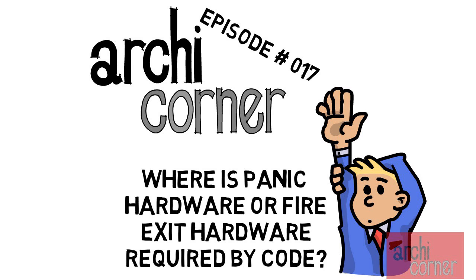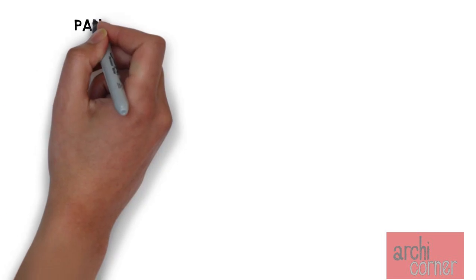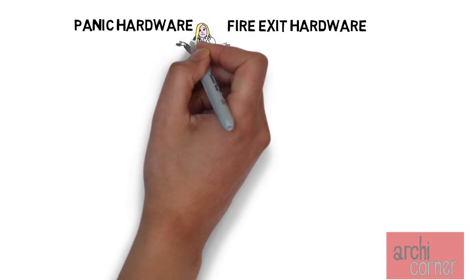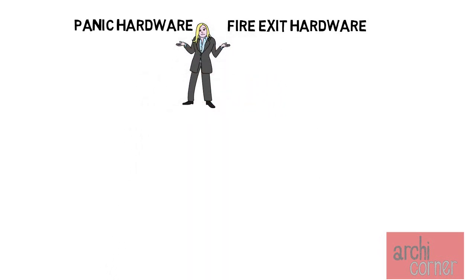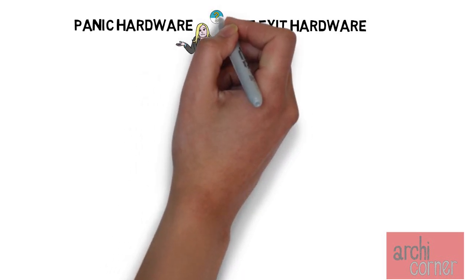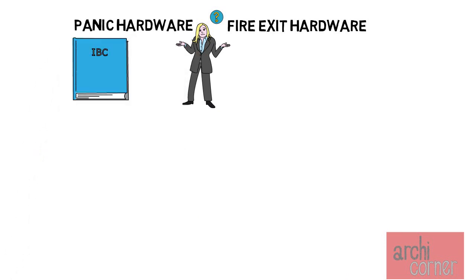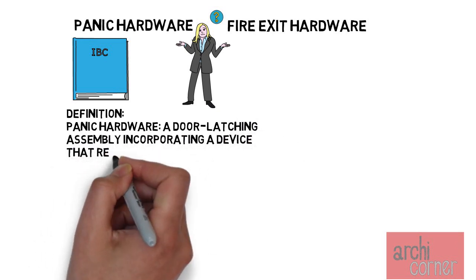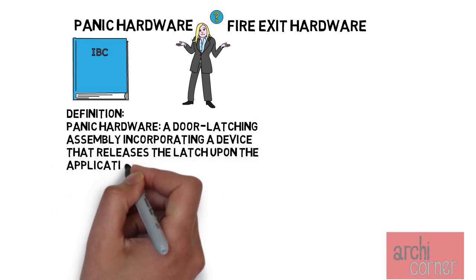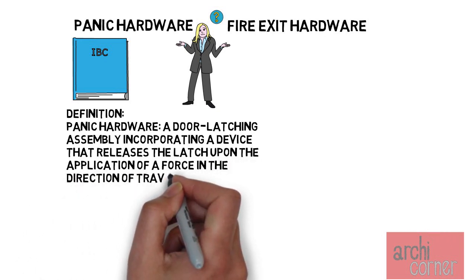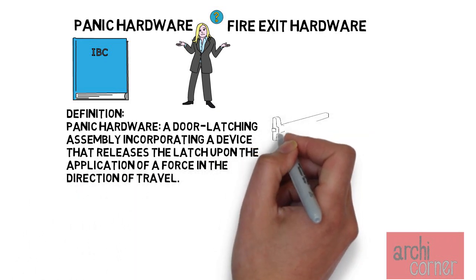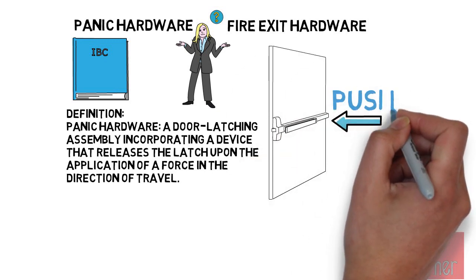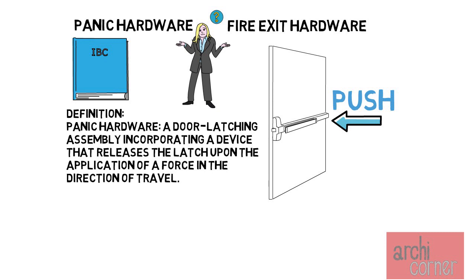To begin, let's discuss the difference between panic hardware and fire exit hardware. These terms are normally used interchangeably. Looking at the IBC, panic hardware is defined as a door latching assembly incorporating a device that releases the latch upon the application of a force in the direction of travel. This picture shows a common panic hardware installation — you press on the bar, which unlatches and pushes the door open.